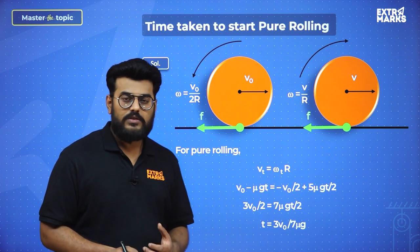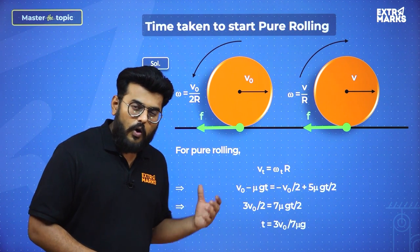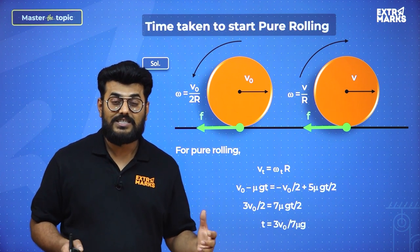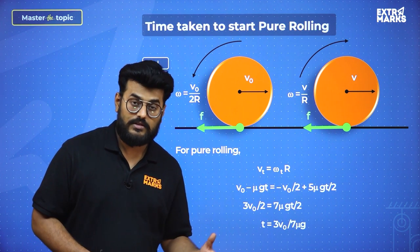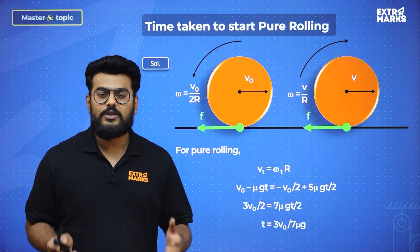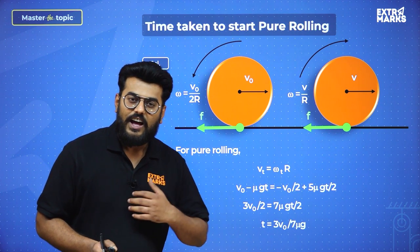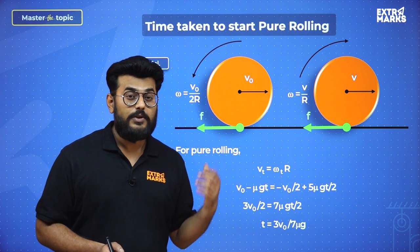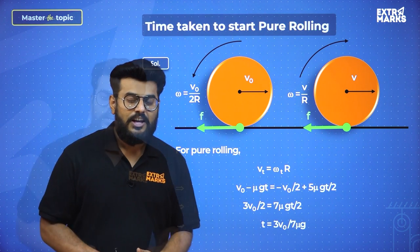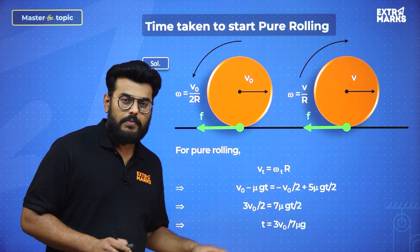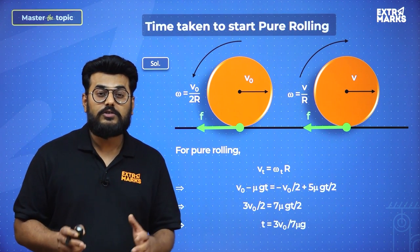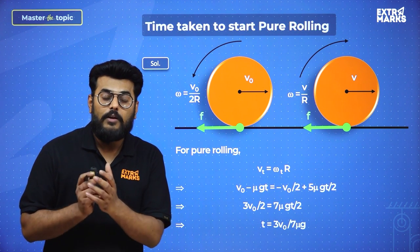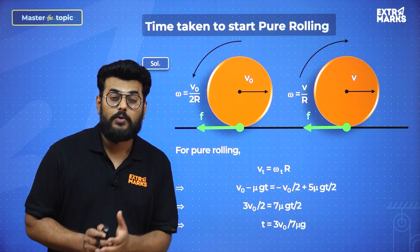The time turns out to be t = 3V₀ / (7μg). Additionally, along with time, you can calculate the distance after which pure rolling starts by using s = ut + ½at², giving the total displacement at which pure rolling begins. That covers how to calculate the time after which a body attains its state of pure rolling.